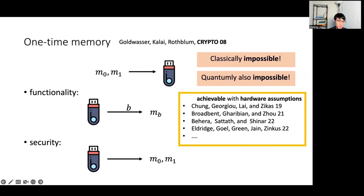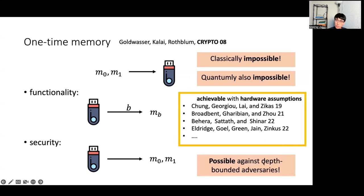Furthermore, we show that one-time memory is indeed achievable with hardware assumptions — basically assumptions that put restrictions and limitations on how a quantum or classical adversary has access to the devices. There is a sequence of work showing that one-time memory can be constructed with all kinds of hardware assumptions. In this work, we show that one-time memory is possible against depth-bounded adversaries, which can be viewed as another form of hardware assumption. Compared to all the hardware assumptions made in previous work, we think this is the mildest hardware assumption, and it also gives a very interesting application with only current quantum devices.